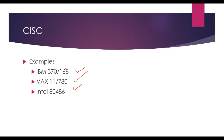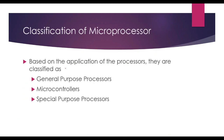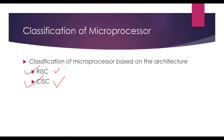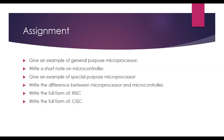So up to this, we have discussed classification of processors based on application and based on architecture. Based on architecture, it is classified into two types: RISC and CISC — Reduced Instruction Set Computer and Complex Instruction Set Computer. This is your assignment for this part: write in your notebook an example of a general purpose microprocessor, a short note on microcontroller, an example of a special purpose microprocessor, the difference between microprocessor and microcontroller, and the full forms of RISC and CISC.